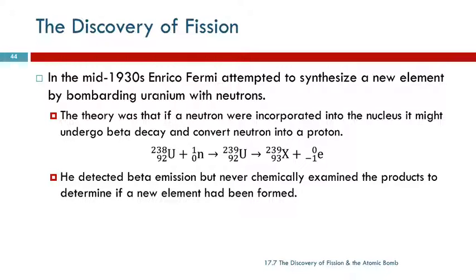Fission. In the mid-1930s, Enrico Fermi attempted to synthesize a new element by bombarding uranium with neutrons. I've told you before that all of those elements with white element symbols on the periodic table are man-made. How do you make a new element? This is how you make a new element. You bombard existing elements and mess with them.